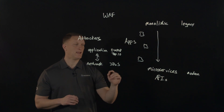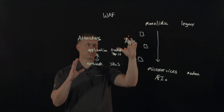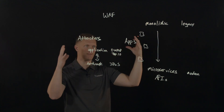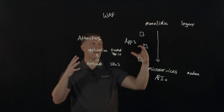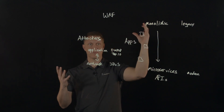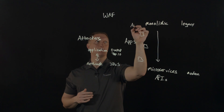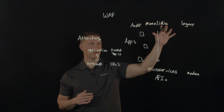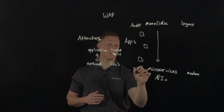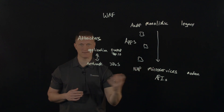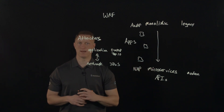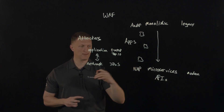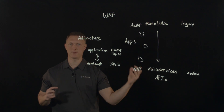Whenever you talk about web application firewalls, you can look at this from an F5 perspective: the Advanced WAF is geared toward monolithic, legacy-type applications, while Nginx App Protect — a more modern, lightweight application security web application firewall — sits toward the microservices end. You can deploy Nginx App Protect seamlessly in DevOps environments.